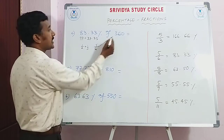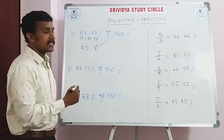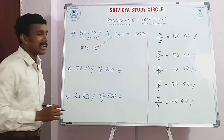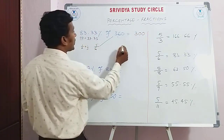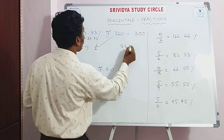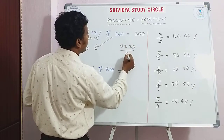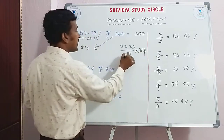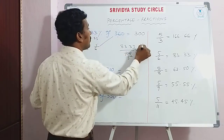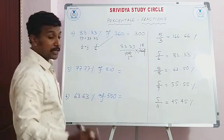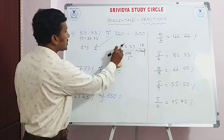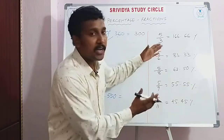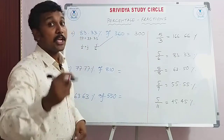Simplification: cancel 6 into 360, giving 60 times. So 5 × 60 = 300 — that's it, no need for more calculation. Compare this to doing 83.33 ÷ 100 × 360 the long way — it would take much more time. That's why knowing these fraction values is very important.